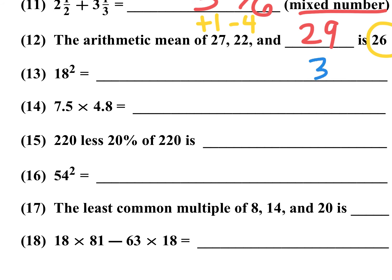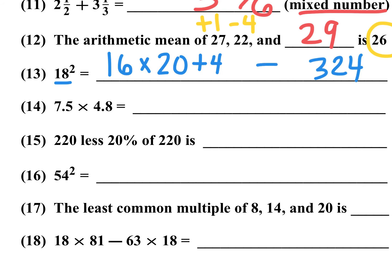Number 13: 18 squared is 324. If you haven't memorized it, use a nearby round number: add 2 to get 20, subtract 2 to get 16, so do 20 times 16, but add back 2 squared (which is 4) to compensate. 16 times 20 is 320, plus 4 gives you 324. It's good to memorize the first 20 or 30 squares.